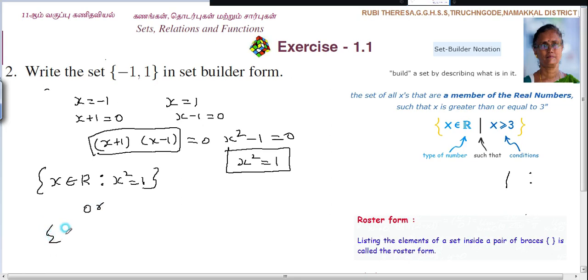Otherwise you can write like this also. x such that x is an element of R where x squared equals 1. Either this way or this way. You can write any one of the way.